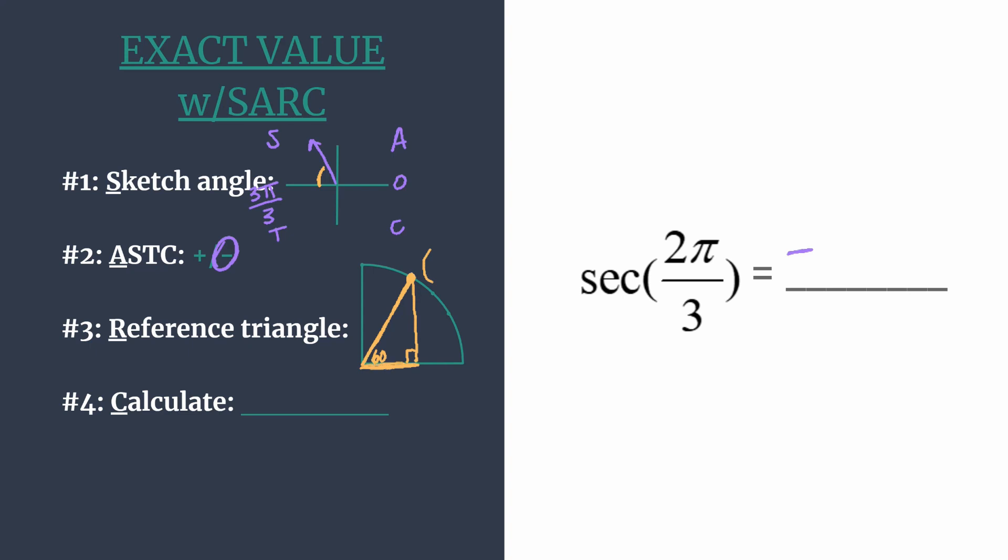Alright, so our short horizontal side, our x-coordinate is going to be 1 half, and our longer leg here will be root 3 over 2. Alright, so now we know our coordinates that we should be working with, and step 4 is to calculate.